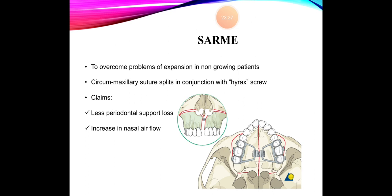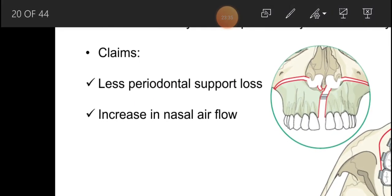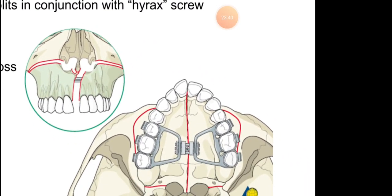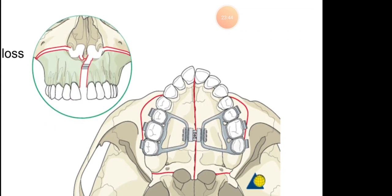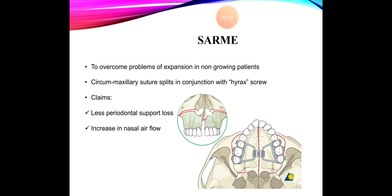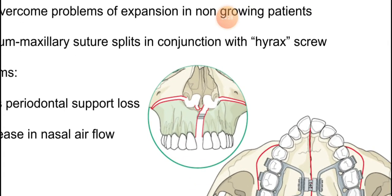In SARME, circummaxillary sutures are split — as visible in these photographs — along with a mid-palatal suture split, and an expander device is placed for expansion. In a non-growing patient it's not only the mid-palatal suture that has fused; all the circummaxillary sutures have also fused. Therefore a circummaxillary split along with the mid-palatal split is performed, then the palate is expanded with a jack screw device. SARME claims less periodontal support loss and increased nasal airflow because it widens the nasal base as well.